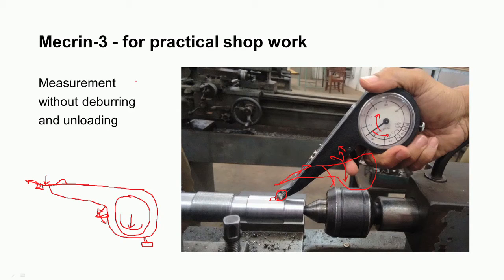The advantage of Mecrin is that surface roughness can be measured without deburring and without unloading the workpiece. Simply stop the machine, stop rotation of the workpiece, clean the surface with a brush, then use the instrument to measure roughness. If roughness is not up to requirement, adjust feed rate and speed, take another cut, and test again. This makes the Mecrin useful for controlling the machining operation.